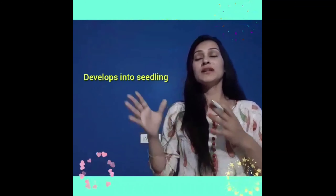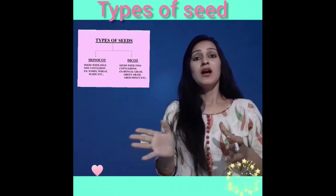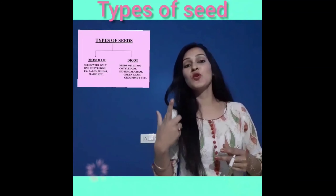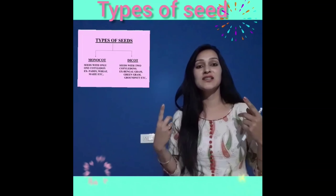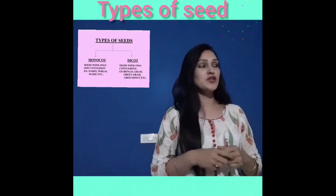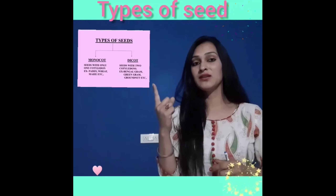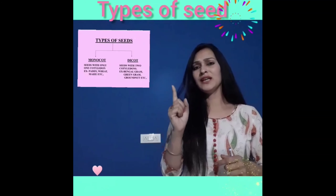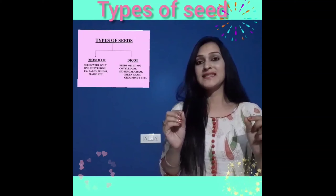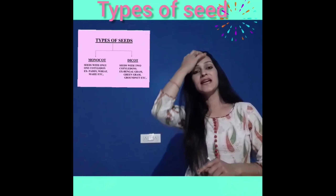Now let us talk about types of seeds. There are two types of seeds. One is monocot and another one is dicot. Monocot seeds have only one cotyledon. For example, paddy, maize, wheat, etc.